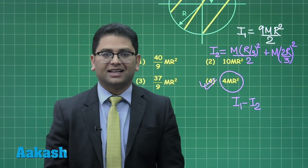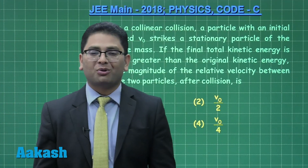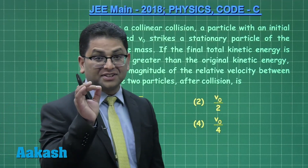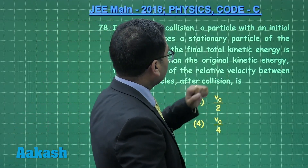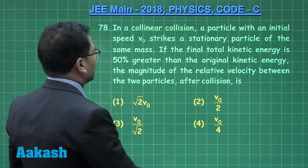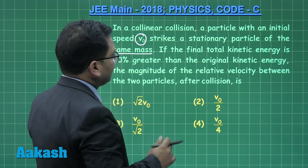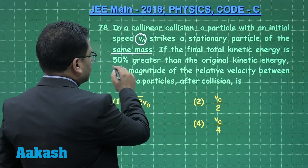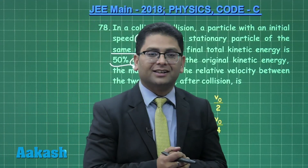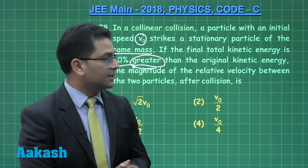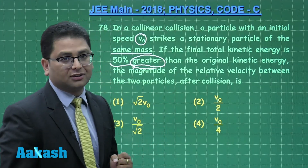Question 78 is another collision problem with a surprise element. In a collinear head-on collision, a particle with initial speed v₀ strikes a stationary particle of the same mass. The final total kinetic energy is 50% greater than the initial — this is called a super-elastic collision. We need to find the magnitude of the relative velocity after collision.